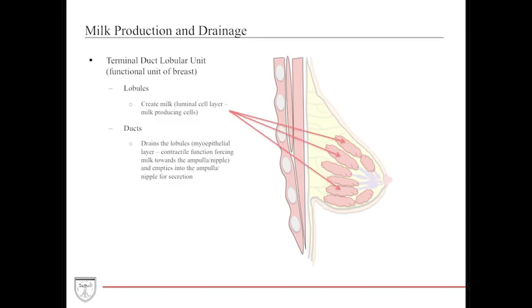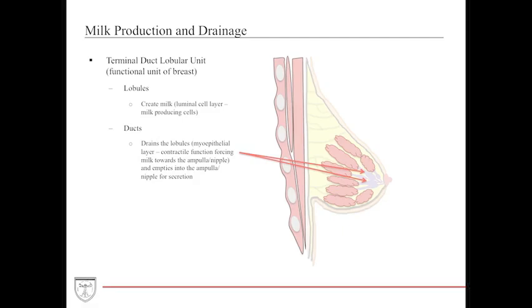The functional unit or parenchyma of the breast is divided into the lobules and the ducts. The lobules are where milk is produced by the luminal cell layer, then excreted into the ductal system. The ductal system drains these lobules and is lined by myoepithelial cells that help with contraction to secrete and propel milk towards the ampulla and eventually into the nipple.